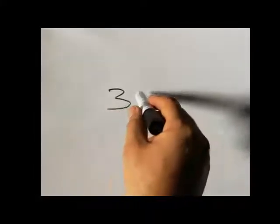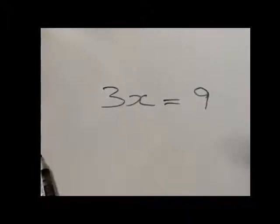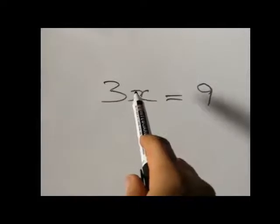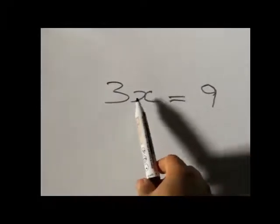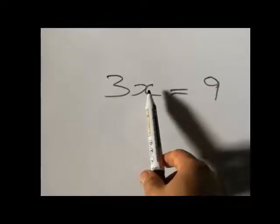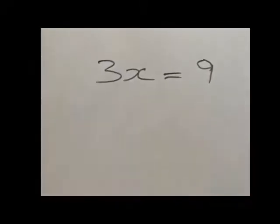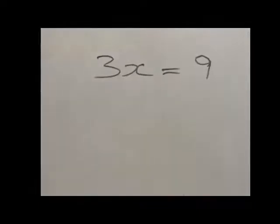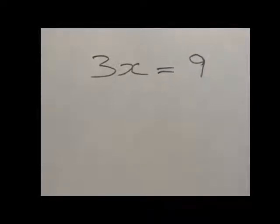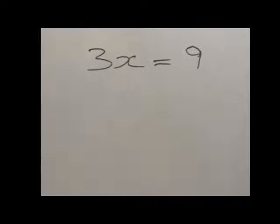Our first problem is 3x equal to 9. When you take a closer look, you will notice that there is no plus or minus sign between the 3 and the x. Since there is no plus or minus sign between them, it means that 3 is multiplying x. So in a layman's understanding, 3 is multiplying a certain number we don't know — we refer to that number as x. And when 3 multiplies x, the answer is 9. So we are looking for a number that when multiplied by 3, gives 9.